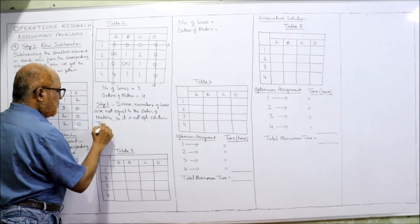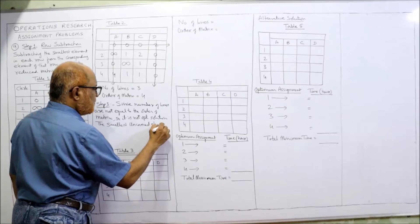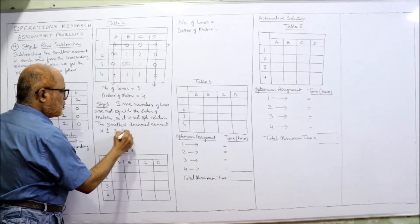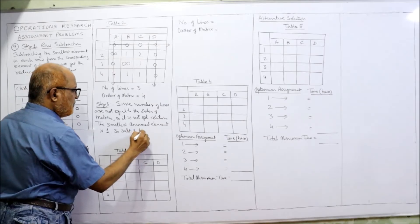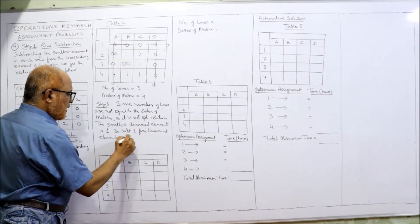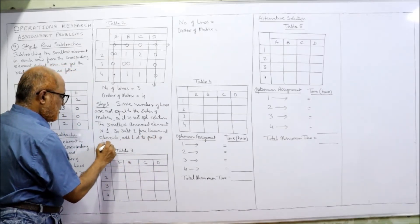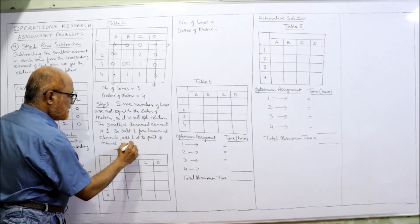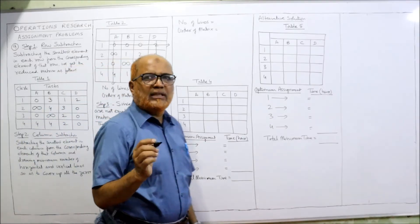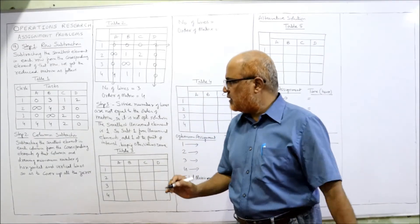The smallest uncovered element is 1. We subtract 1 from all uncovered elements, add 1 at the points of intersection, and keep all other values the same. After doing this, we draw the minimum number of horizontal or vertical lines again to cover all zeros.